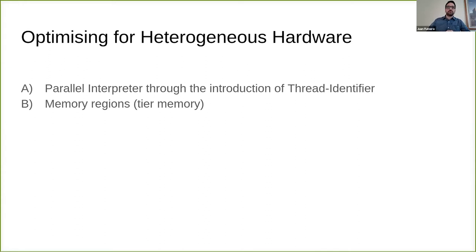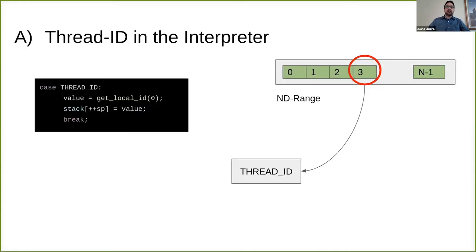Let's start with the first one, the thread ID. The thread ID is pretty simple. We expose a new bytecode. It's basically pushing on top of the stack the local ID, or global ID - in this case local ID - of the value of the GPU. Imagine we're running thread 3 or thread 1000. That value would be on top of the stack, and that value will be used later on to index data in the heap.